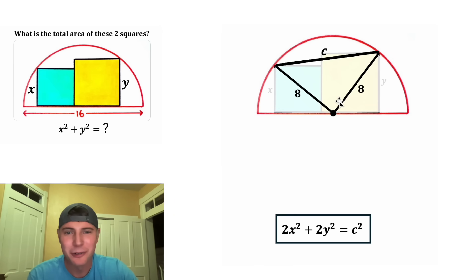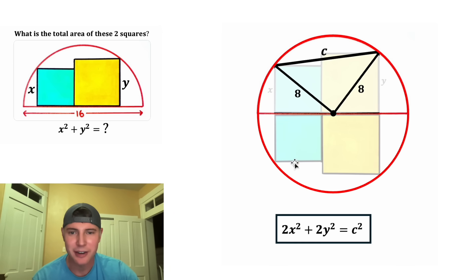Next, I want to figure out what is this angle right here. And there's a really cool way to do this. First, we're going to complete this circle. And then we're going to reflect these two squares down here.